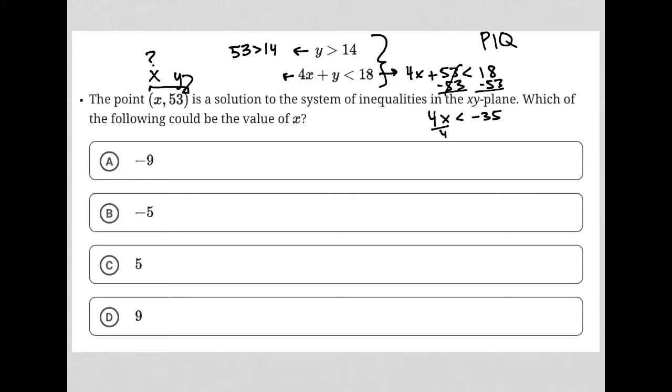I then divide both sides by 4, and I have x is less than negative 8.75.